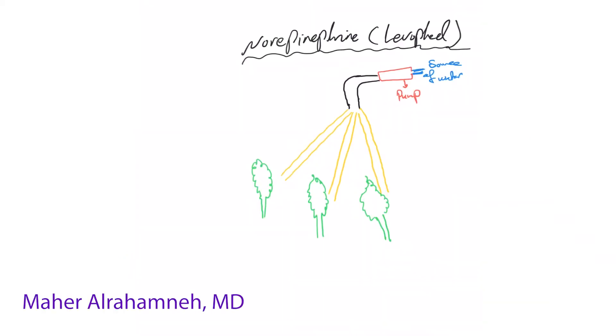Welcome back, let's start with norepinephrine and levofed. The reason we're starting with it is because it's the most commonly used vasopressor in ICU for hypotensive patients with shock. So first let's see how it works.